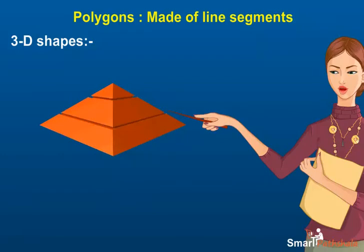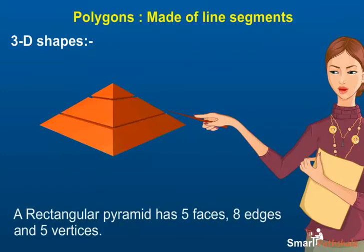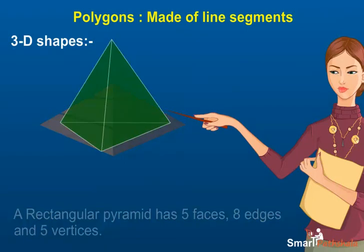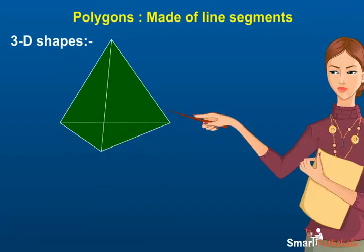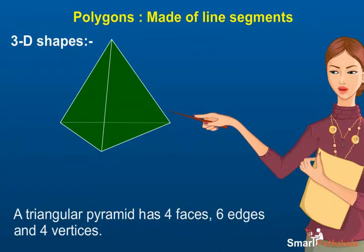Faces, edges, and vertices of a rectangular pyramid: a rectangular pyramid has five faces, eight edges, and five vertices. Faces, edges, and vertices of a triangular pyramid: a triangular pyramid has four faces, six edges, and four vertices.